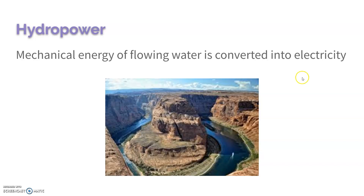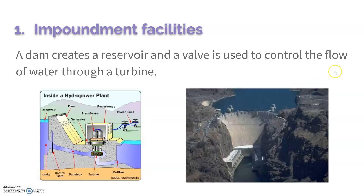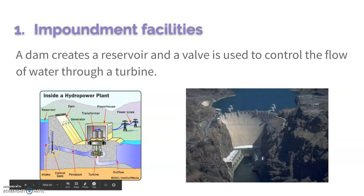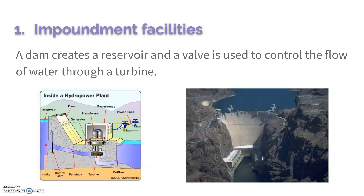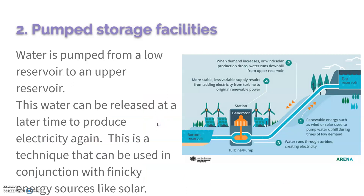We do this a few different ways. The most commonly known is the impoundment facility, where a dam is built that blocks the natural flow of the river. It creates a reservoir of water, and then we can use a valve to control the release of that water — turn it off if we don't need it or change how much gets through. It goes past a turbine, and as it spins the turbine it spins the generator to produce electricity.